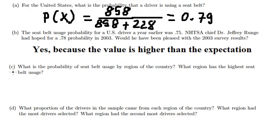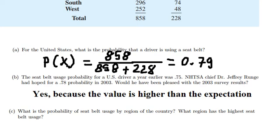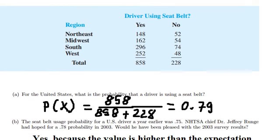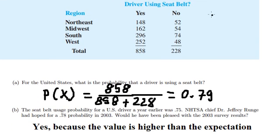So we go to question C. What is the probability of seat belt usage by region of the country? So to do about this one, we need to find the total by the region. So we use about 148 plus 52, so we have 200.